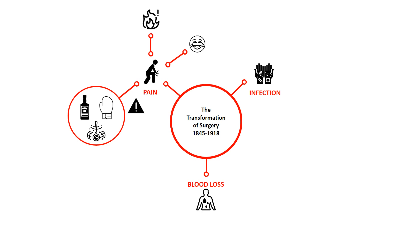In 1842, American doctor Crawford Long discovered the anaesthetic qualities of ether, but he didn't publish his work. The first public demonstration of ether as an anaesthetic was carried out in 1846 by American dental surgeon William Morton. Ether is an irritant and is also fairly explosive, so using it in this way was risky.